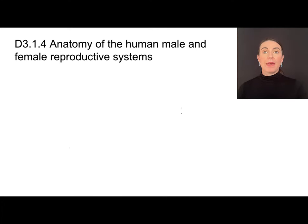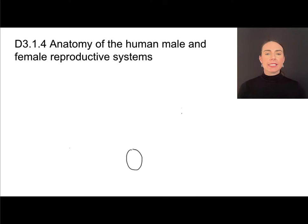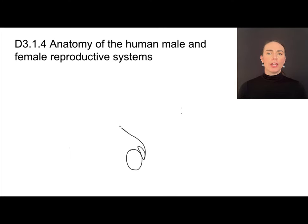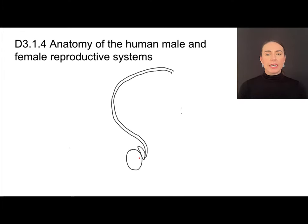We're going to draw the male reproductive anatomy. It's easier to draw the male anatomy from the side view rather than the front view. First I'm going to draw the testes — this is the site of sperm production. Just off of the testes is a structure called the epididymis, where sperm will go to mature. Coming off of this structure is a tube called the sperm duct, also known as the vas deferens. During ejaculation, sperm would leave and go through the sperm duct out the penis in a loopsy loop path.